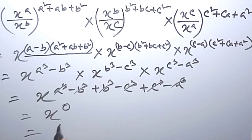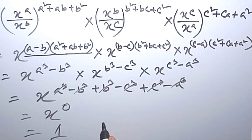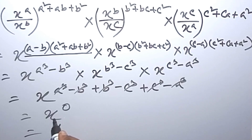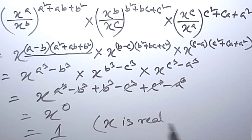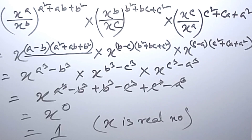x to the power zero is equal to 1, if x is a real number. So this is the answer.